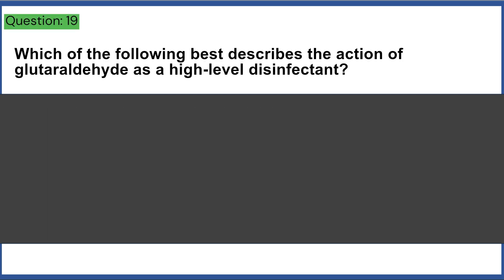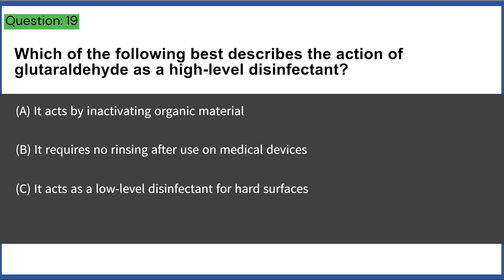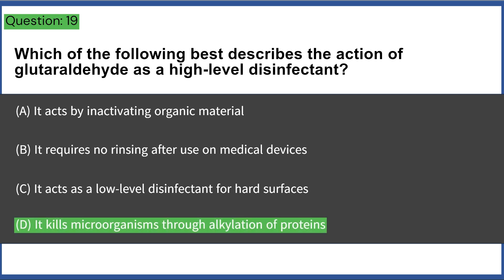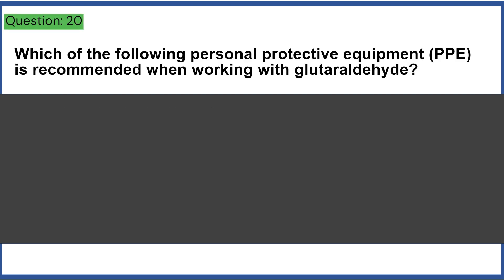Which of the following best describes the action of glutaraldehyde as a high-level disinfectant? a) it acts by inactivating organic material, b) it requires no rinsing after use on medical devices, c) it acts as a low-level disinfectant for hard surfaces, d) it kills microorganisms through alkylation of proteins. Answer: D, it kills microorganisms through alkylation of proteins.